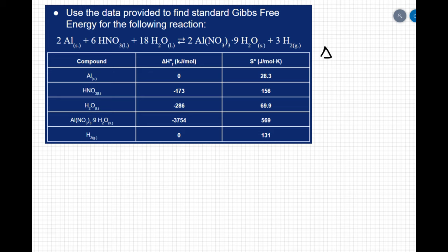Gibbs tells us that delta G equals delta H minus T delta S. So in order to find delta G we're going to have to find a delta H value, a temperature, and a delta S value.